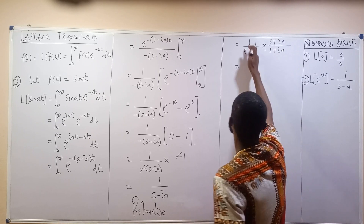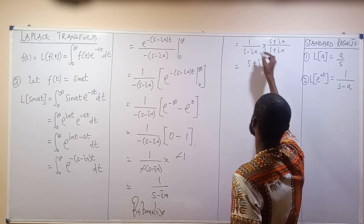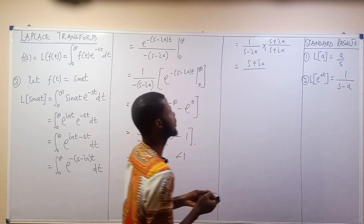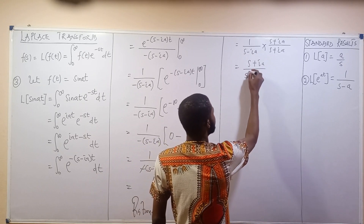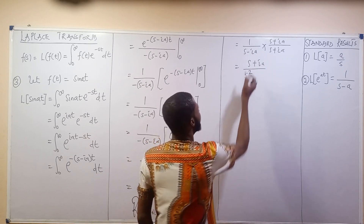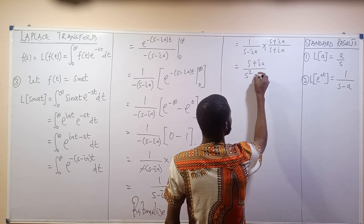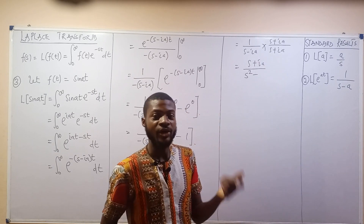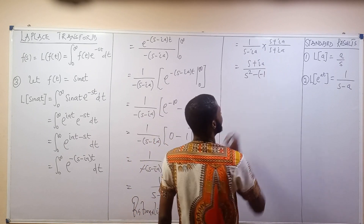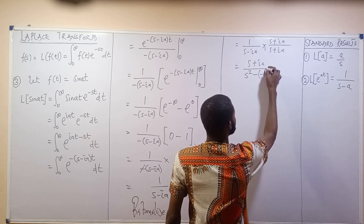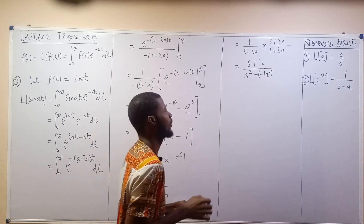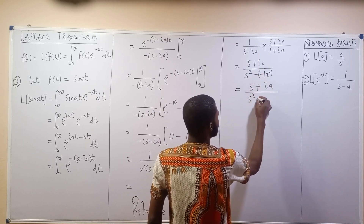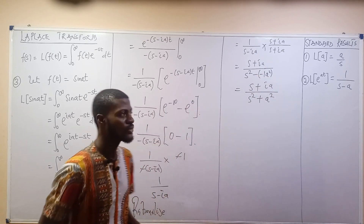This gives us 1 times S plus iA in the numerator. For the denominator: S times S is S squared, minus times plus is minus, i times i is minus 1, and A times A is A squared. So minus times minus A squared gives plus A squared. The result becomes S plus iA divided by S squared plus A squared.